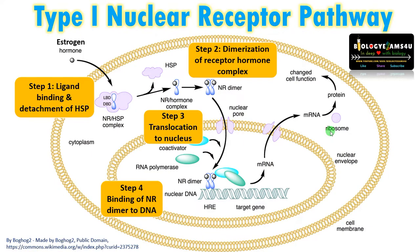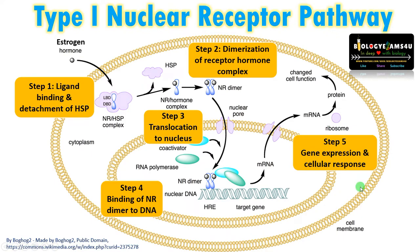In summary, the type 1 nuclear receptor pathway works as follows: the receptor is located in the cytoplasm. Upon ligand binding, heat shock proteins are detached, making the receptor active. The receptor dimerizes, the complex translocates to the nucleus, and the nuclear receptor dimer binds to DNA. Coactivators and RNA polymerase are recruited, genes are transcribed downstream forming mRNA and finally protein, resulting in changed cellular function.